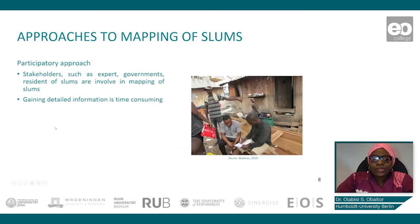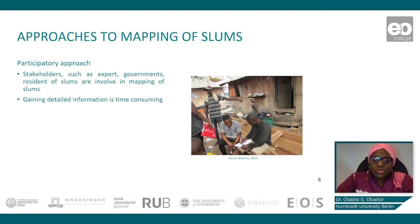The second approach is the participatory approach, which involves the coming together of stakeholders such as experts, government, and slum dwellers to map slum boundaries. This is a very good approach because it incorporates knowledge of experts as well as local context to map slums. Though, obtaining detailed information through this method is time consuming, especially in cities with many slums.